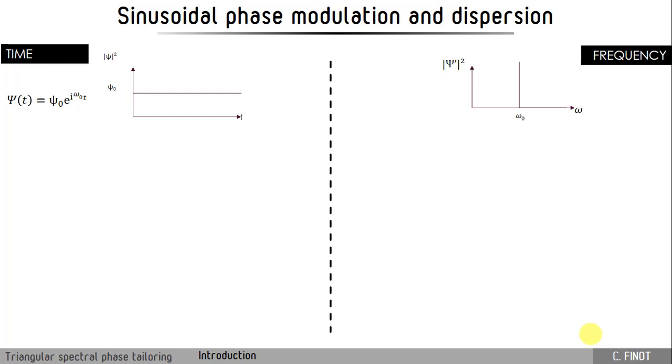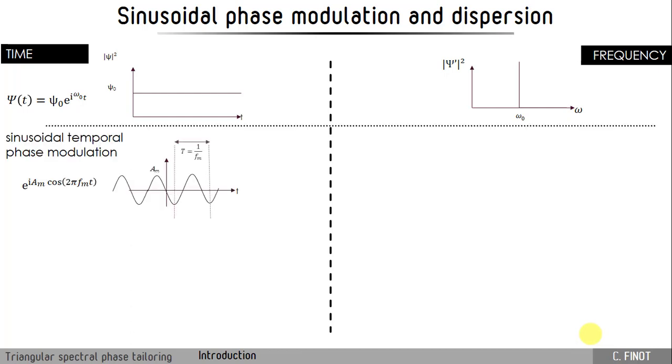In the frequency domain, this is a single component at a carrier frequency, and then we modulate this continuous wave using, in the temporal domain, a sinusoidal wave. This sinusoidal wave, its frequency will give the period and the repetition rate of the pulse train that we target, and in the frequency domain, it leads to the emergence of different sidebands that are spaced by the repetition rate, and we can find the amplitude of those different sidebands using Jacobi-Anger expansion, and what we can see is that the amplitude of the sideband is proportional to a Bessel function of the first kind of order n.